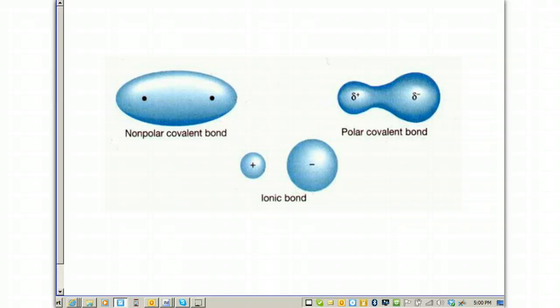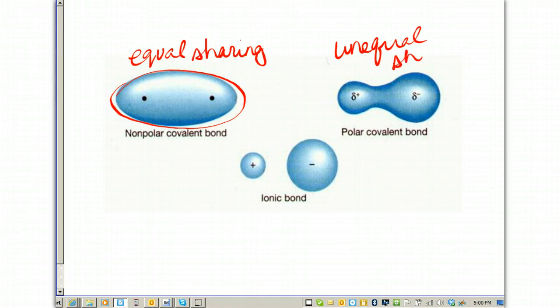So non-polar covalent is an equal sharing of electrons. Notice that the electron cloud has an equal distribution for both atoms involved in the bond. A polar covalent bond is an unequal sharing. This is where the more electronegative element has a stronger pull on the electrons, causing it to have a partially negative charge, noted with the symbol delta to the negative. It kind of looks like a squiggly S with a negative symbol. It means partially negative.